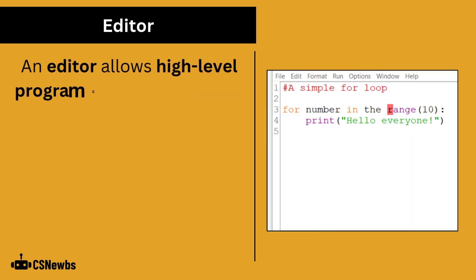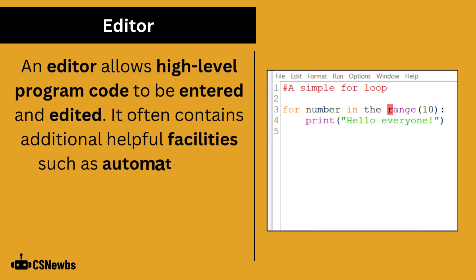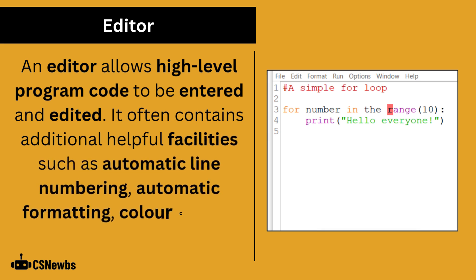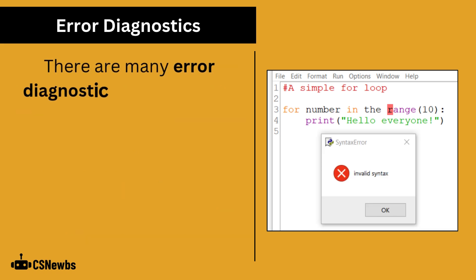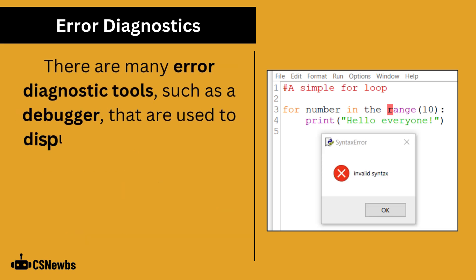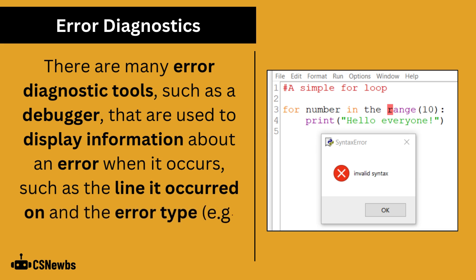An editor allows high-level program code to be entered and edited. It often contains additional helpful facilities such as automatic line numbering, automatic formatting, color coding and statement completion. There are many different error diagnostic tools, such as a debugger, that are used to display information about an error when it occurs, such as the line it occurred on and the error type, such as syntax.